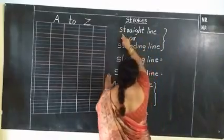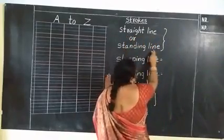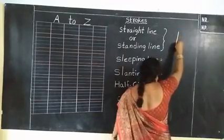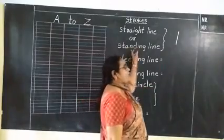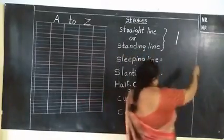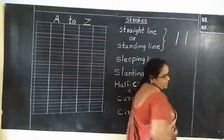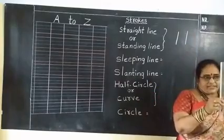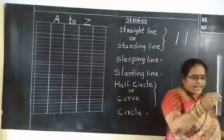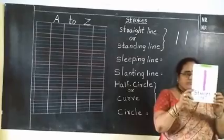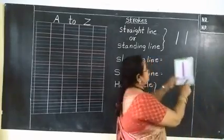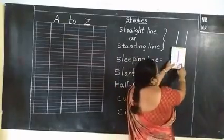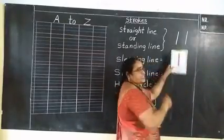This is a straight line, also called a standing line. What is this? Straight line. It is called straight line or standing line. See here — this is straight line or standing line. You can say straight line or standing line.